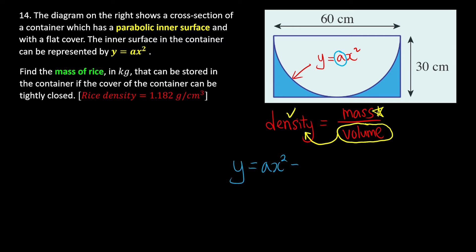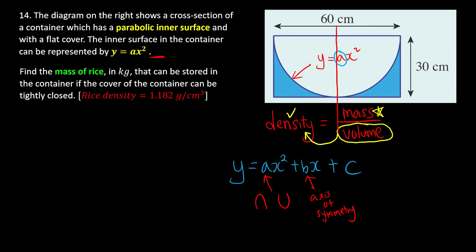For a quadratic curve y = ax² + bx + c: 'a' tells us whether the curve is a smiley face (opens up) or a sad face (opens down). 'b' tells us how the axis of symmetry shifts. Since this equation has no bx term, b = 0, meaning the axis of symmetry lies on the y-axis.